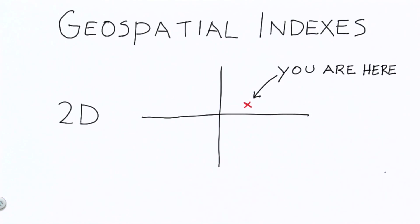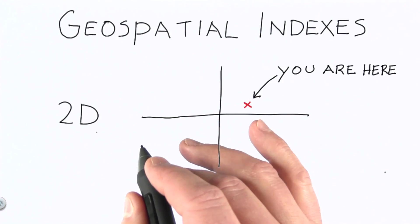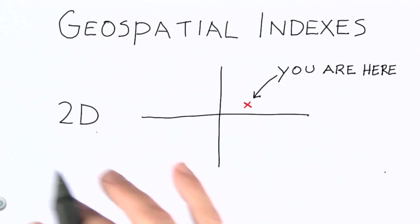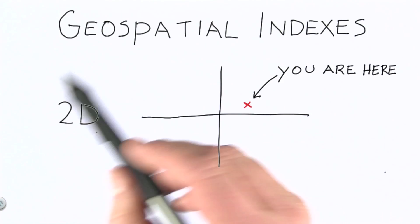The type of geospatial index we're going to talk about is 2D geospatial indexes. MongoDB also provides support for spherical geospatial indexes, that is, those that take into account the curvature of the earth. But I'll direct you to the documentation and our courses at MongoDB University if you're interested in learning more about those.